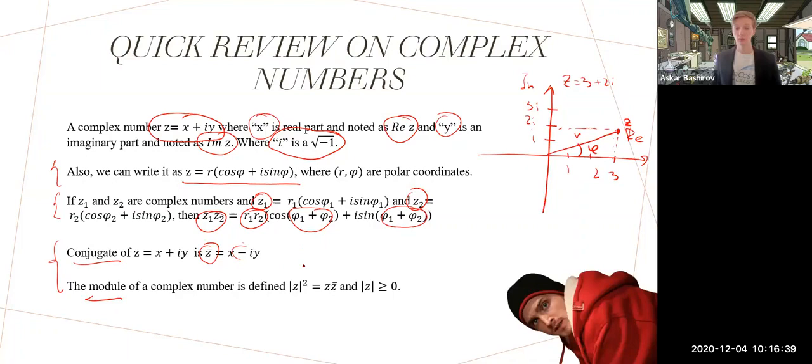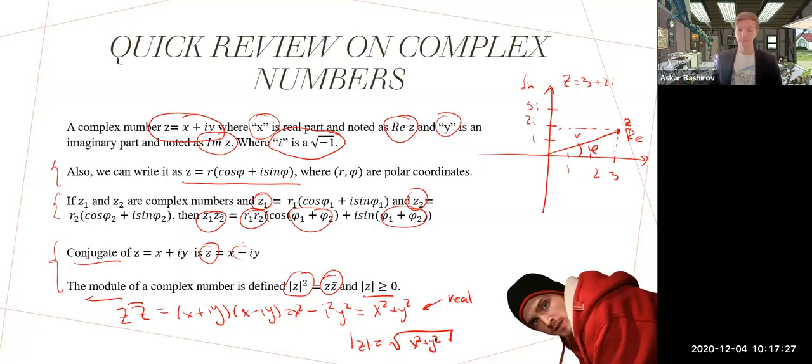The modulus of a complex number is defined a little different than usual. It's defined as |z|² = z·z̄. Let's show that z·z̄ is actually real: (x + iy)(x - iy) = x² - ixy + ixy - i²y². The middle terms cancel and i² = -1, so we have x² + y². This is a real function which means |z| > 0. The actual value is |z| = √(x² + y²) and it's real and positive.